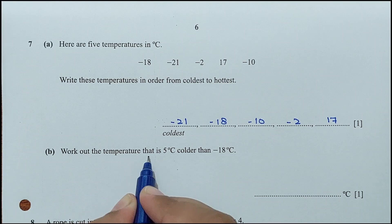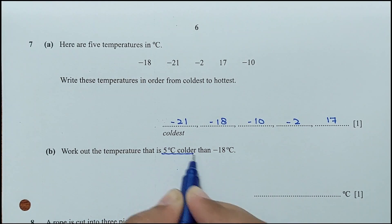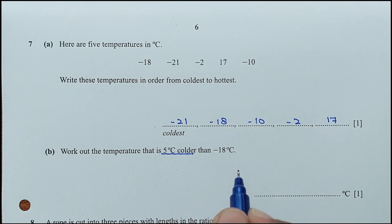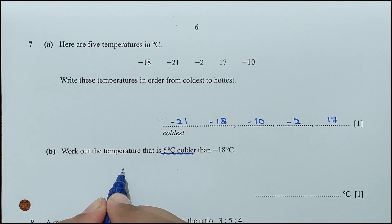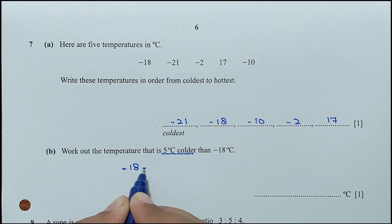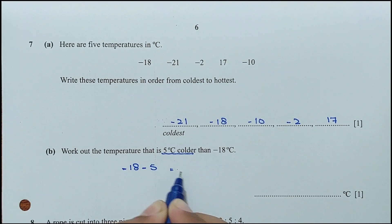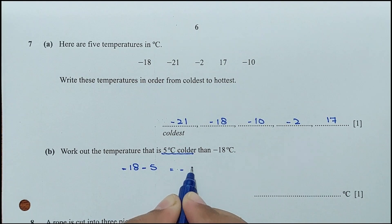Part B: work out the temperature that is 5 degrees colder than −18. From −18 we subtract 5, giving −23 degrees.